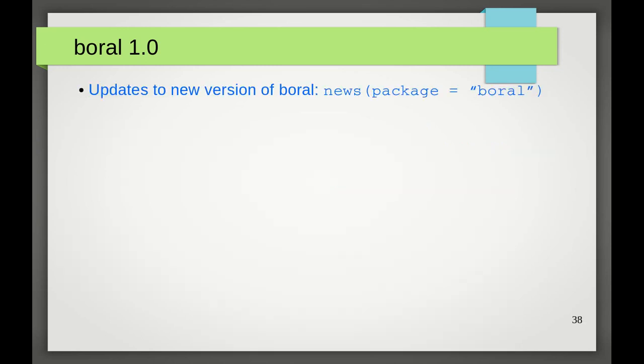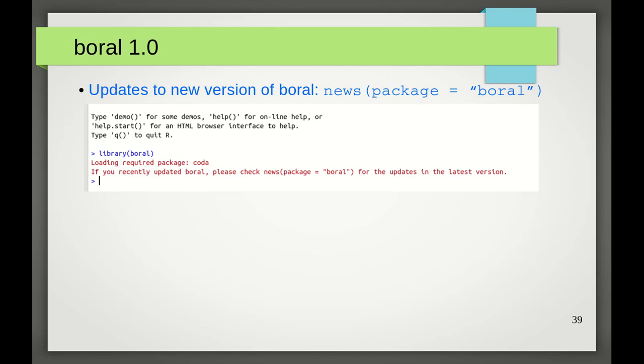Alright folks, so that was a brief list stating some of the major changes made to boral over the past two years. As mentioned at the beginning, there are also many minor changes, and you will find these, well, when you find these using boral. Also, I should point out that for every new version of boral which comes out, I do provide a list of the changes that have been made in the news, and you can check this using the news function. I don't actually think many people know about this, and so at the risk of annoying everyone out there, I've now put a message stating to check the latest news every time you load the boral package. Of course, this is just for those who have recently updated boral. Otherwise, if you are thoroughly peeved off by such startup messages, then you are free to email your complaints to complaints at majorfirstworldproblems.com.